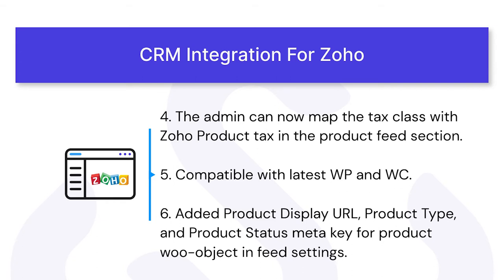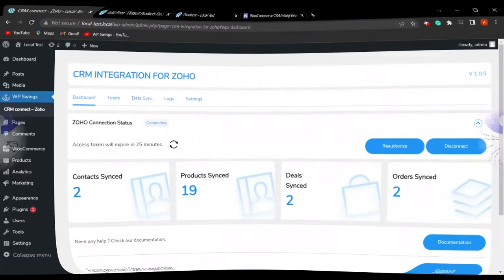We have also added tax class mapping with Zoho product tags, so you can map your tax class with Zoho product tags in the product feed section. CRM Integration for Zoho plugin is now compatible with the latest WP and WooCommerce. We have also added product display URL, product type, and product status meta keys for the product WooCommerce object in feed settings.